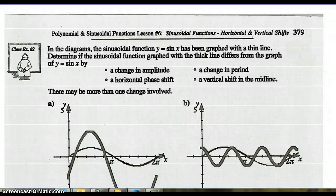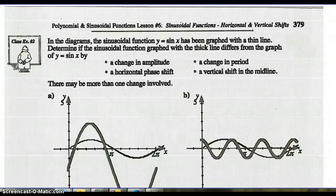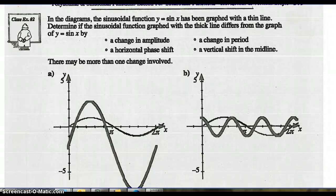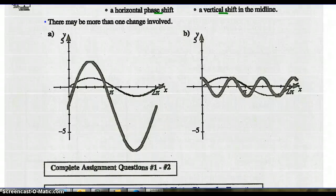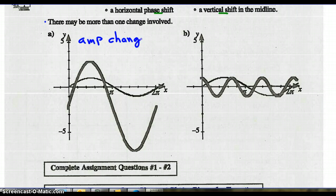Example 2: the graph of sine x has been graphed with a thin line. Determine if the thick-line graph differs from sine x by any of these four things: a change in amplitude, a change in period, a vertical shift, or a horizontal shift. Note there may be more than one change involved.